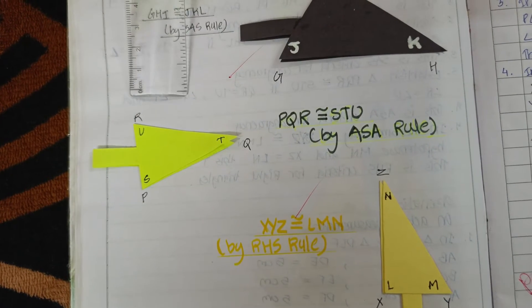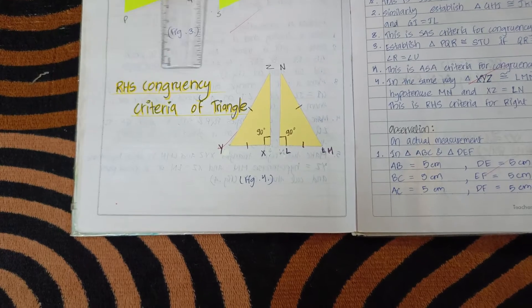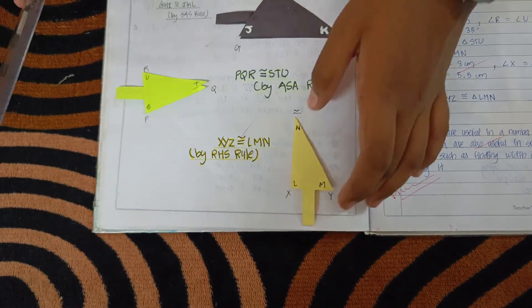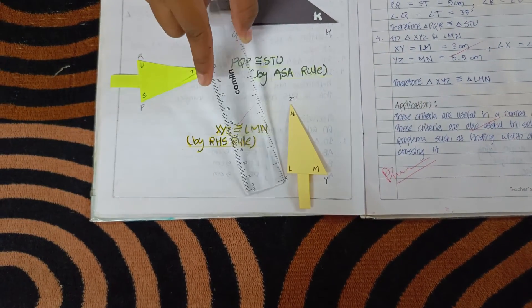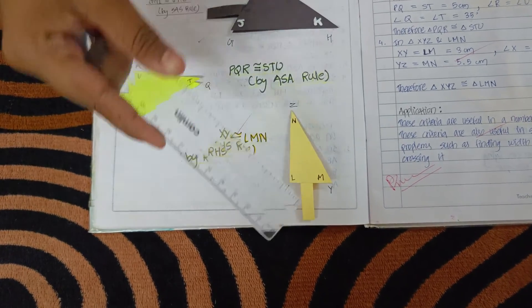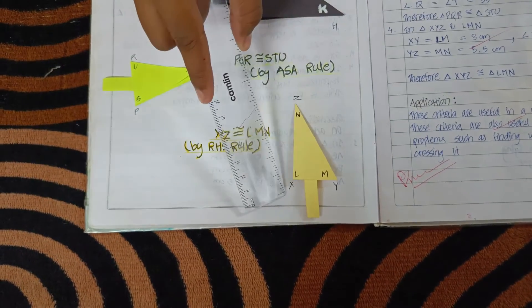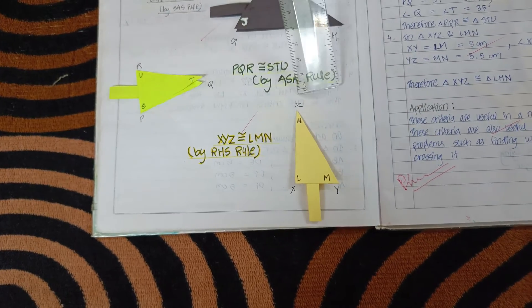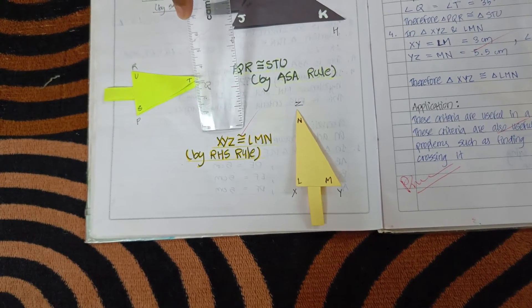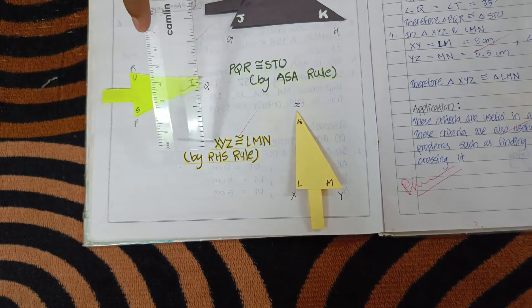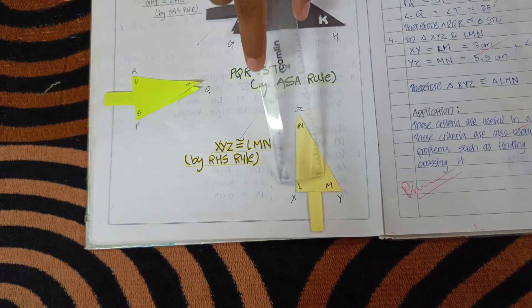By RHS congruency criteria of triangles: we have triangle LMN and triangle XYZ such that angle L equals angle X, each equal to 90 degrees. XY equals LM and YZ equals MN. So we can say that triangle XYZ is congruent to triangle LMN. This is called the RHS congruency criteria of triangles. By this, all corresponding parts of the triangles are equal.